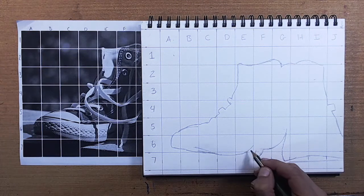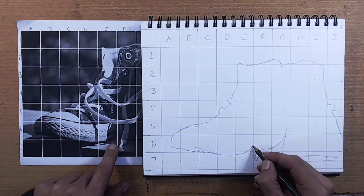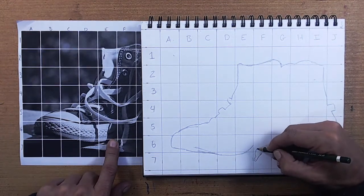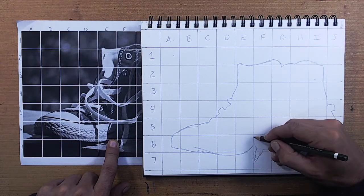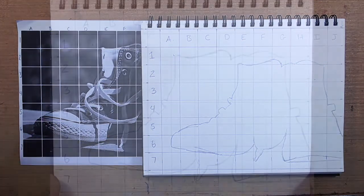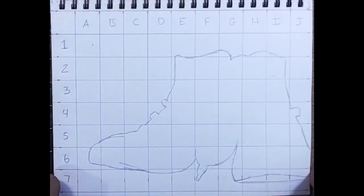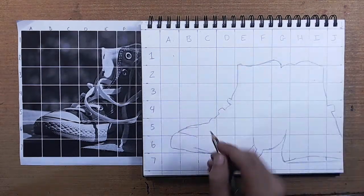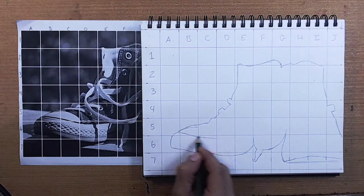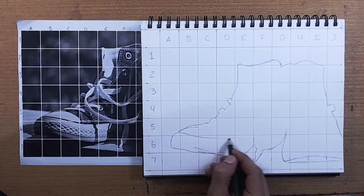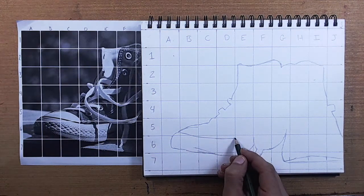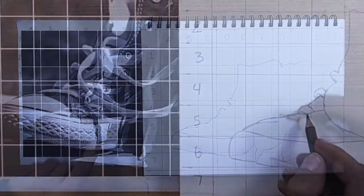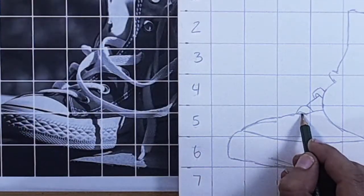Alright, so the overall shape of our subject is nearly complete. At this stage, it's a good idea to take a moment and just analyze what you've drawn and again, double-check that you haven't missed a column or row, that your subject doesn't look a little too skinny or wide or short or tall. If everything looks alright at this point, let's go ahead and get into some of the contours on the inside of our subject.